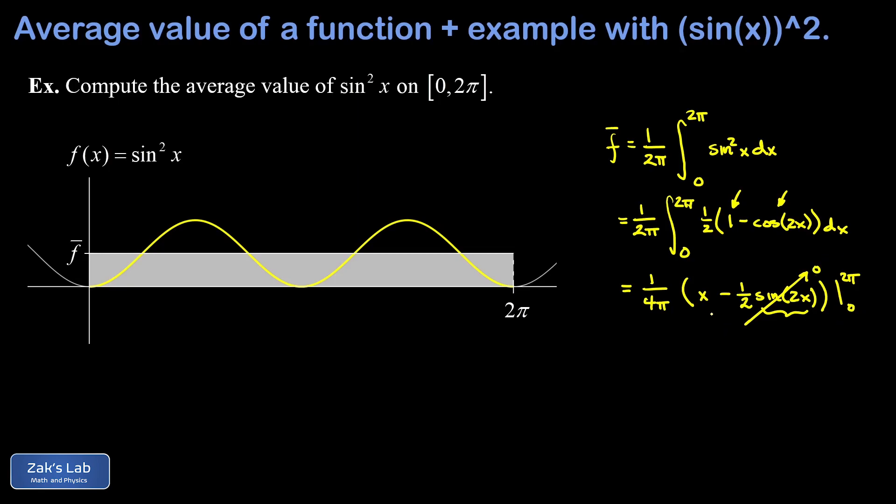I also notice that when I sub in the lower limit into this first term x, that gives me zero, so I don't have to worry about that. The only thing that survives here is when I sub in 2π for x, so I end up with 1 over 4π multiplied by 2π, and the π's cancel and a factor of 2 cancels and I get one half.